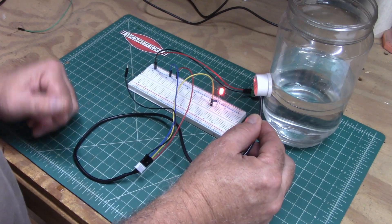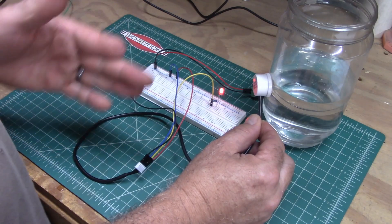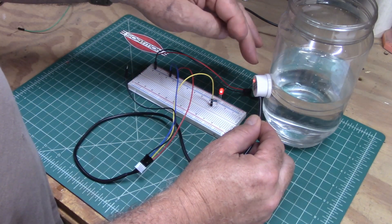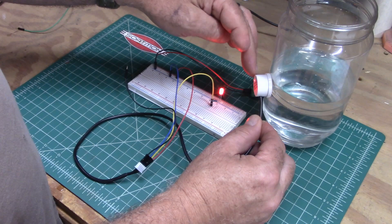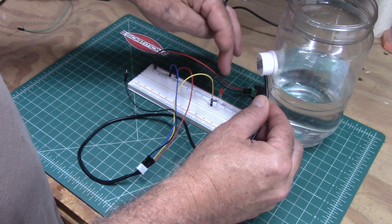So this arrangement would work if you were wanting to run a pump. When the water gets too high, it'll turn on, and then as the water gets lower it'll turn off.